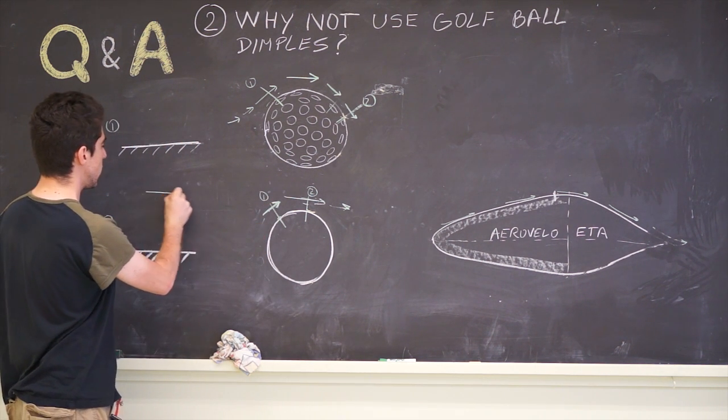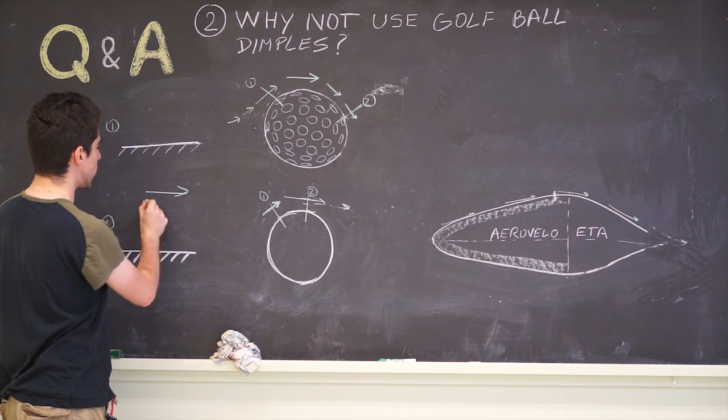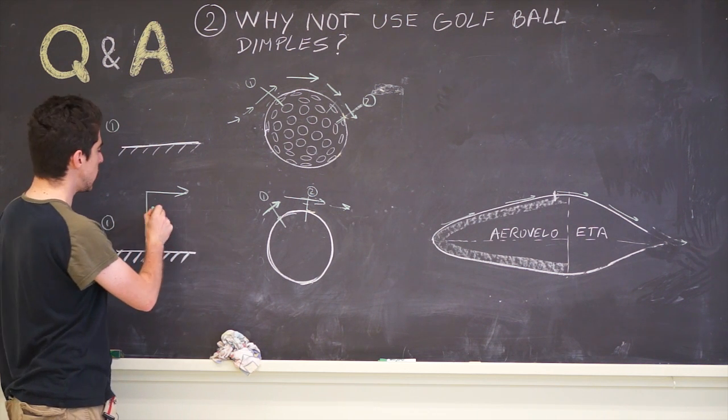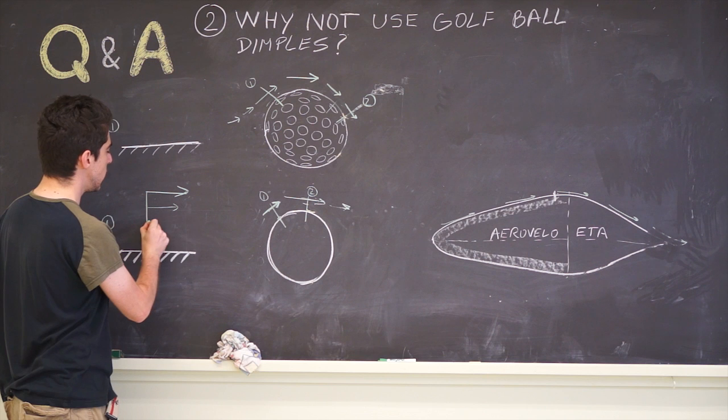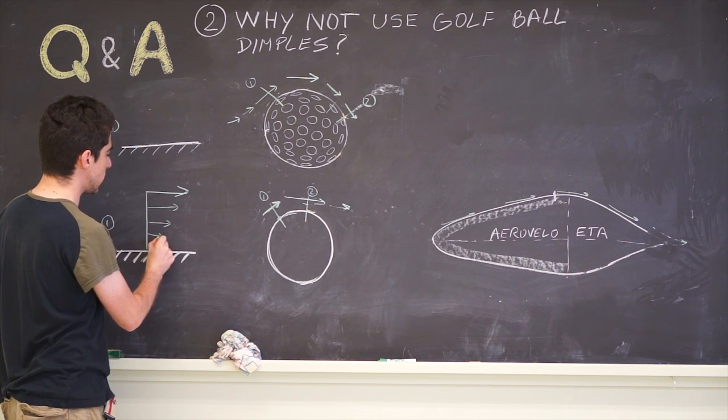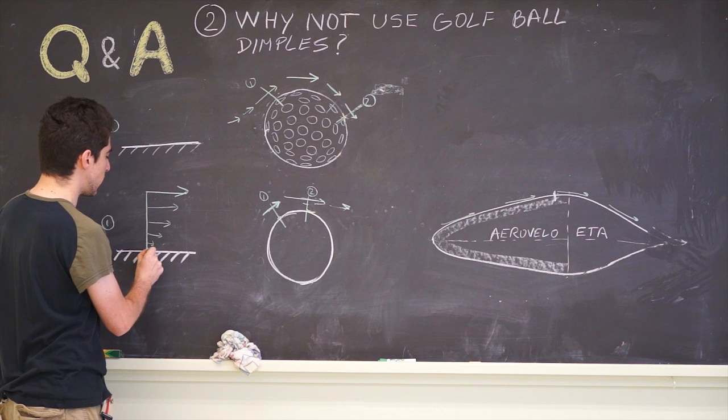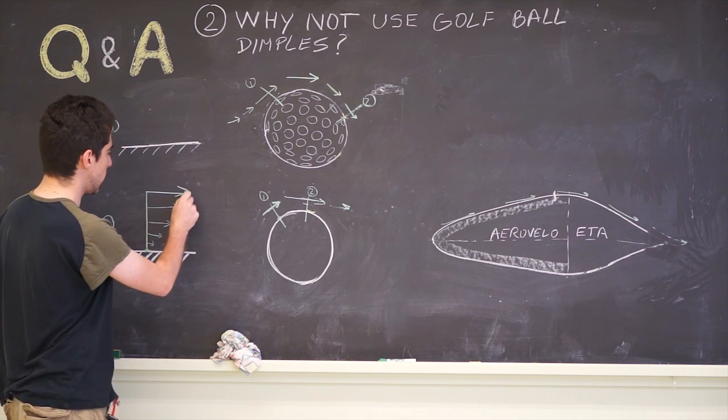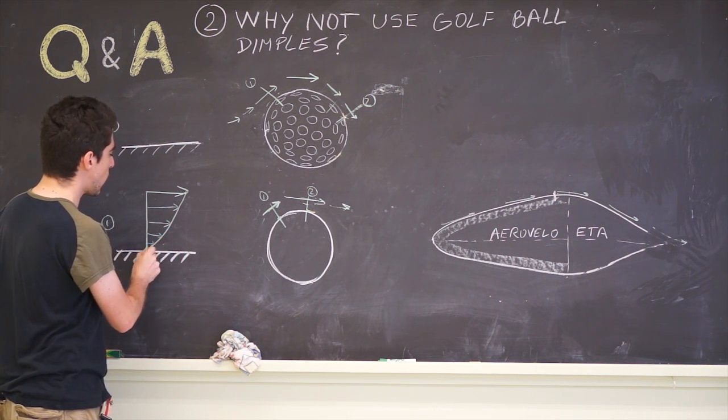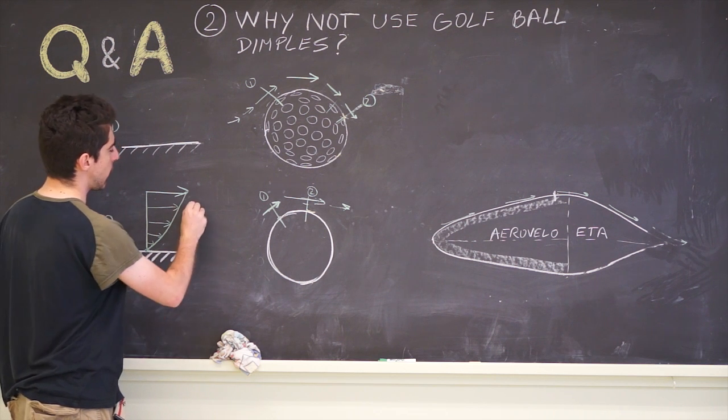It turns out that if you look close to the surface, you will see that the velocity decreases as it gets closer to the surface, up to right next to the surface it has zero velocity. This profile we call the boundary layer.